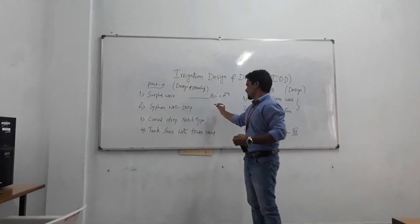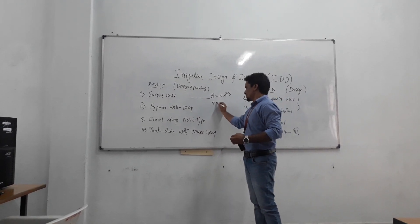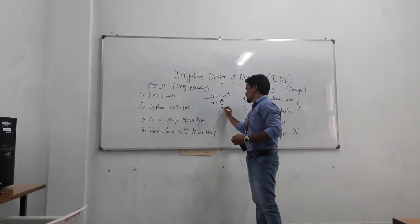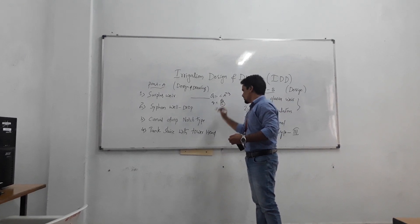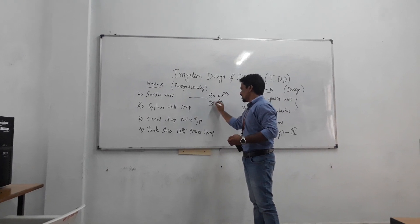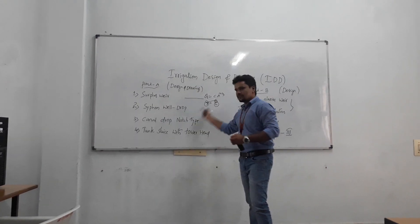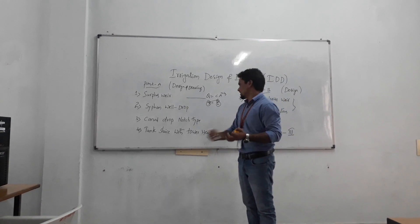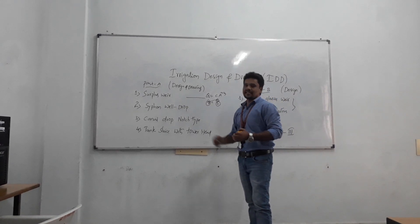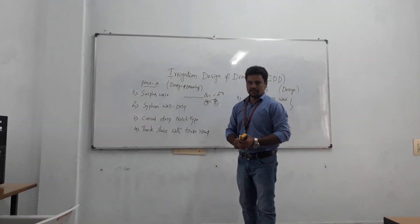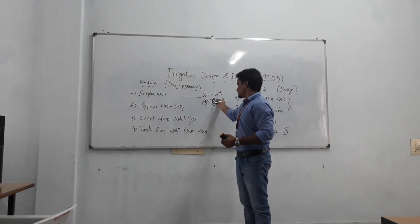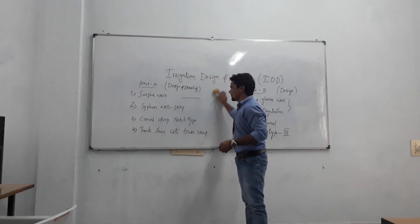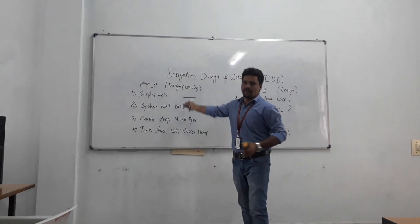From Q, you can find out what is small q, that is capital Q divided by L. We don't know L initially, but this can be related to capital Q as discharge intensity. After that, you go for length, and everything follows from the formula.